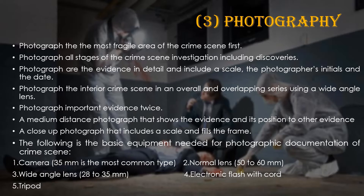The basic equipment needed for photographic documentation of a crime scene includes: a camera with 35 mm, which is the most common type; a normal lens of up to 50 to 16 mm; a wide-angle lens; an electronic flash card; a flash with card; and a tripod.